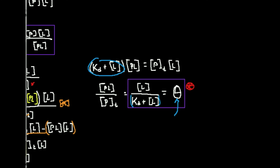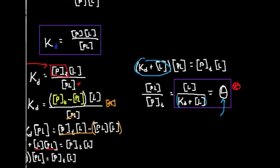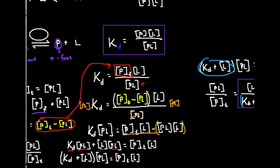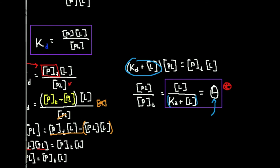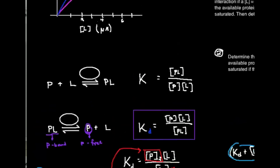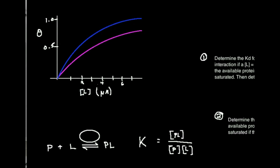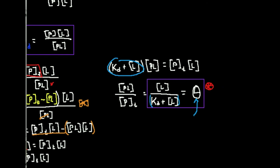This expression is really useful for a number of reasons. Ligand concentrations are easy to measure — you can add a certain amount of ligand and easily measure that. In contrast, PL is hard to measure directly. KDs can be determined through a graphical method we'll cover in another video. So if you know the KD and the ligand concentration, you can determine the fraction of binding sites that are occupied. This is the derivation of this important expression for protein-ligand interactions. In future videos, we'll apply this to various practice problems. Thank you, and make sure to keep watching.